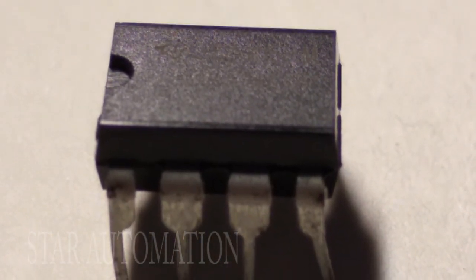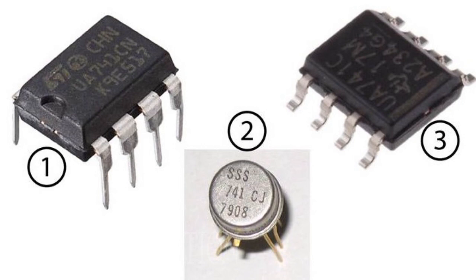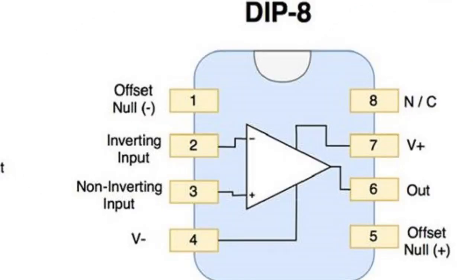Op-amp comes in eight-pin DIP package, metal can package, and surface mounted IC. Op-amp has eight pins. Pin 7 and pin 4 are plus VCC and minus VCC pins. Pin 2 is the inverting input and pin 3 is the non-inverting input. Pin 6 is the output pin. Pin 1 and pin 5 are offset null pins.